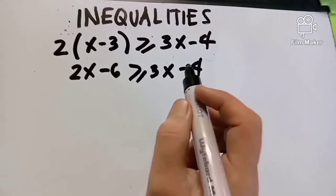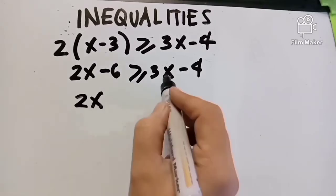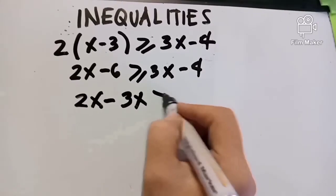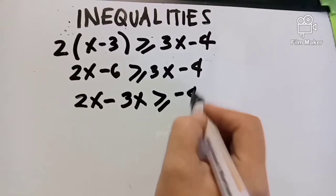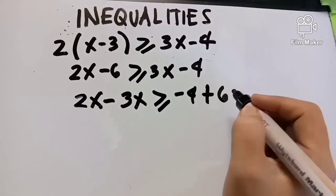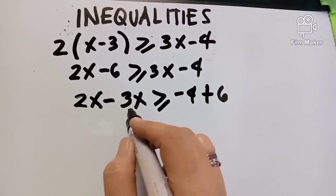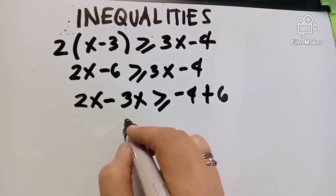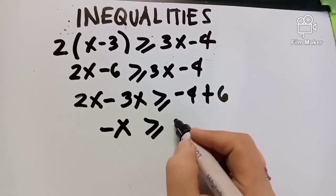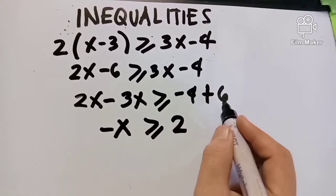Now we transpose. 2X minus 3X on the left side, and transposing negative 6 to the other side gives positive 6. So we get 2X minus 3X, which is negative X, greater than or equal to negative 4 plus positive 6, which equals 2. So negative X is greater than or equal to 2.